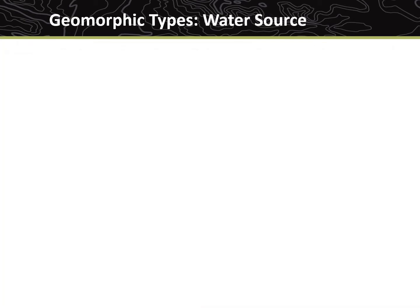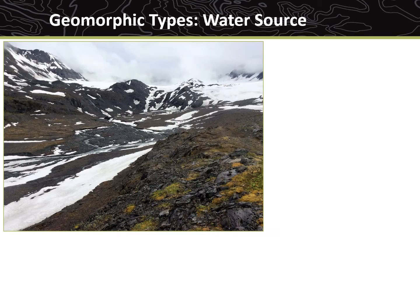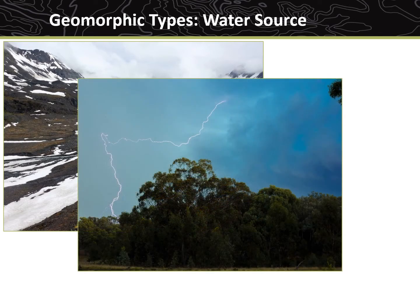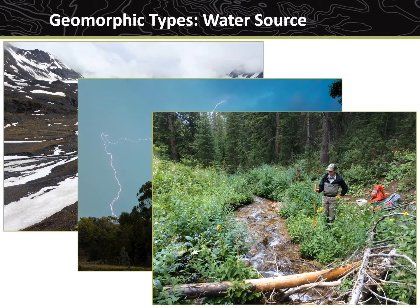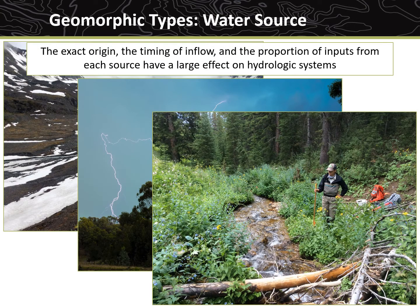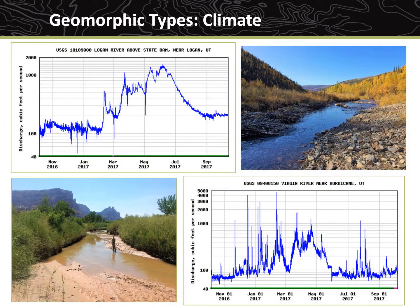The water in streams can come from various sources, including precipitation such as snow and rain, or from groundwater, springs, or a combination of these. The exact origin, the timing of inflow, and the proportion of inputs from each source determine the hydrology of a stream. For example, spring-fed systems tend to have more stable flows than systems reliant on direct precipitation. The climate, topography, and geology of a watershed have a large impact on a stream's characteristics, including its size and flow patterns.